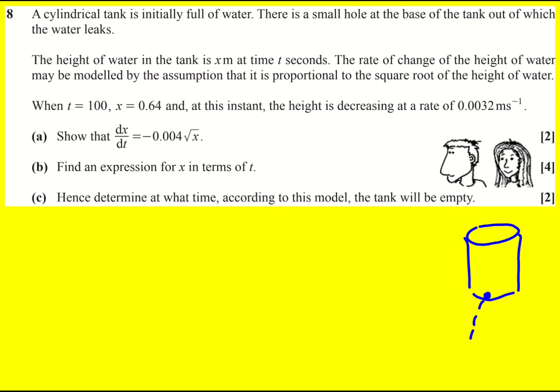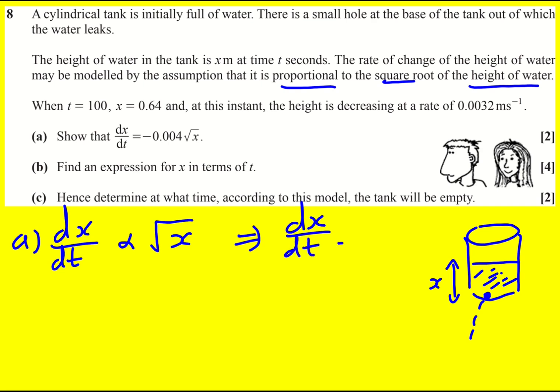We're told that the height of the water at time t is x, that's going to be going down, and the rate of change of the height of the water, now that is going to be dx by dt because it's how the height changes with time, and we're told that we're modeling it to be proportional to the square root of the height of the water, so proportional to root x, and this implies that dx by dt is going to equal k root x.